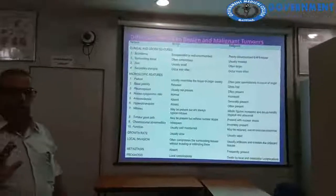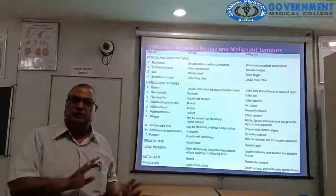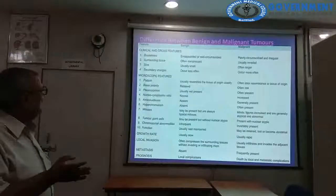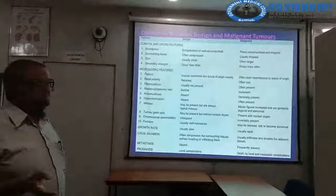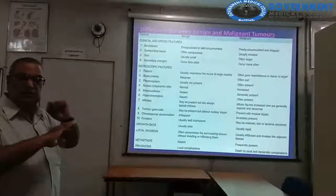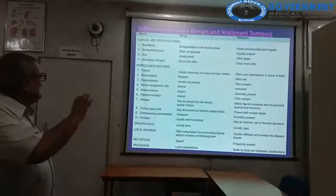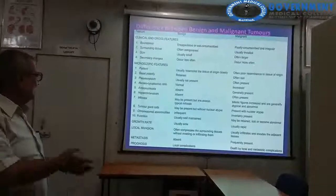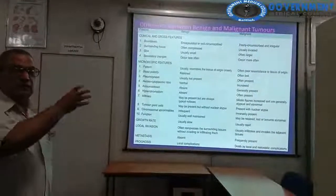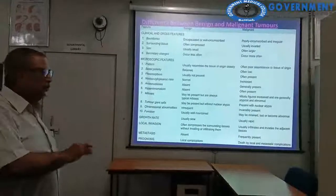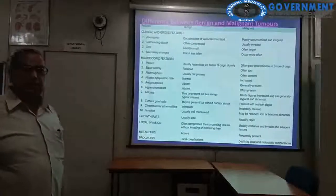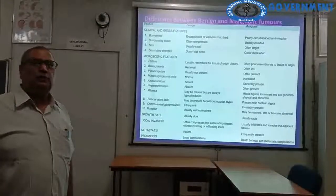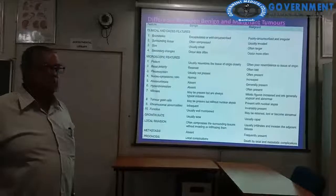Benign versus malignant tumour comparison: benign tumours have well-defined boundaries, are encapsulated, compress surrounding tissue; malignant tumours are poorly circumscribed and invade surrounding tissue. Benign tumours are smaller; malignant are larger. Secondary changes like haemorrhage and necrosis are uncommon in benign but common in malignant. Growth rate is slow in benign and rapid in malignant. Mode of growth is expansive in benign and invasive in malignant. Metastasis is absent in benign but frequent in malignant. Prognosis is better in benign; in malignant, death occurs by local and metastatic complications.